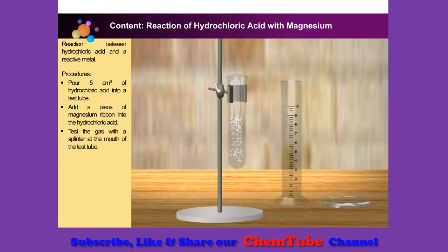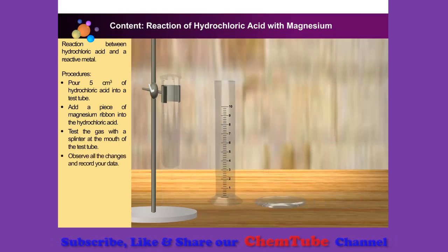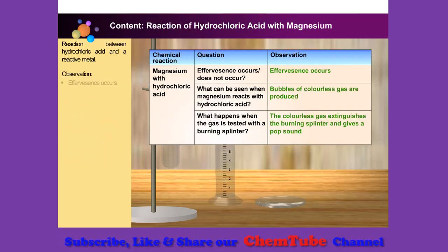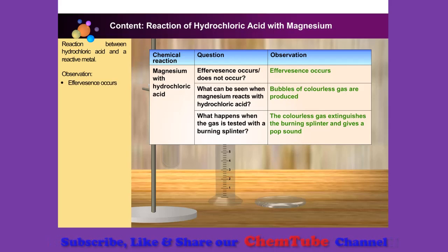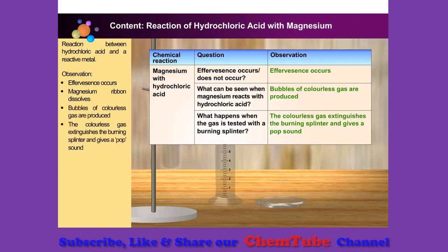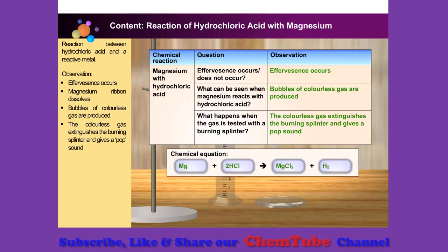Let's test the gas with a burning splinter. We can see that effervescence occurs when hydrochloric acid reacts with magnesium. Magnesium dissolves in the acid and gas is produced. The colourless gas gives a pop sound when tested with a lighted splinter, indicating that hydrogen is produced. The reaction produces magnesium chloride, a salt, and hydrogen gas.